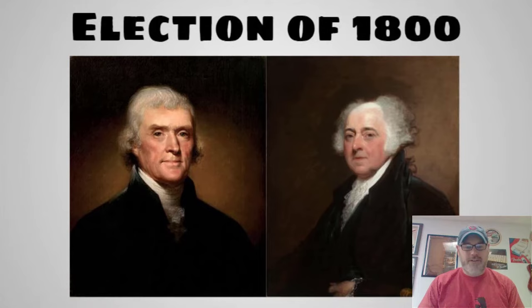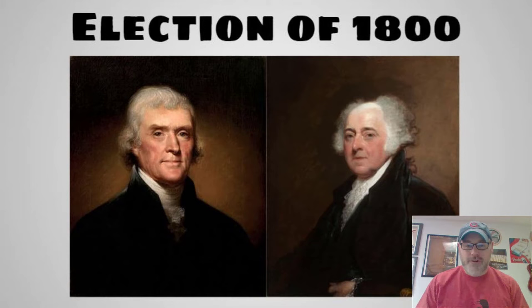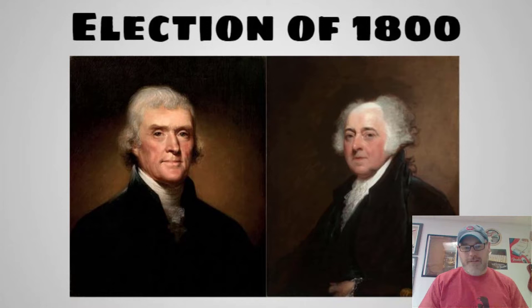In this election, we have Thomas Jefferson running for the Democratic Republicans — he was the challenger. And then we have the incumbent, second president of the United States, John Adams, who was running on the Federalist ticket. These guys had run against each other before in 1796, but at that time in the Constitution, whoever finished second in the election would end up being the vice president. So Thomas Jefferson had spent the last four years serving as John Adams' vice president, even though they had extremely different views about how the government was supposed to run.